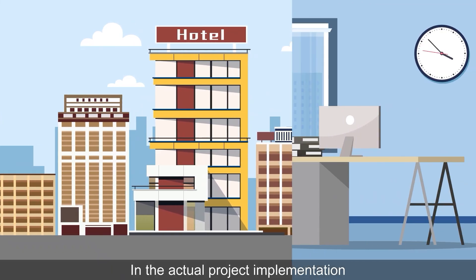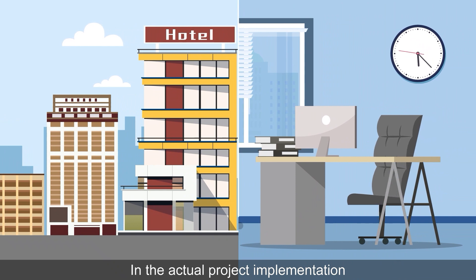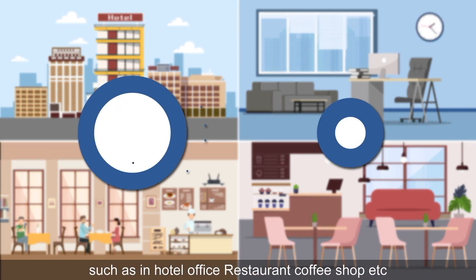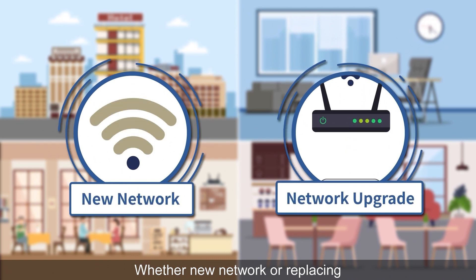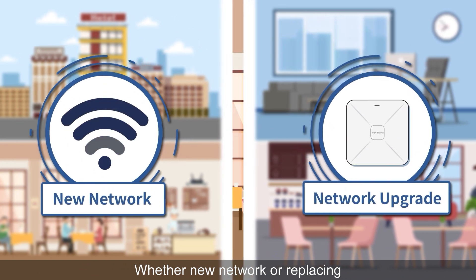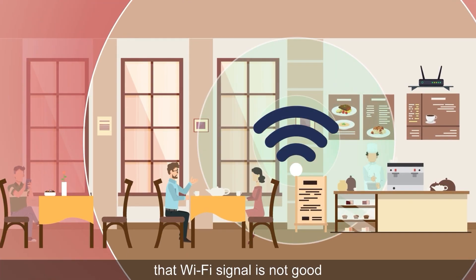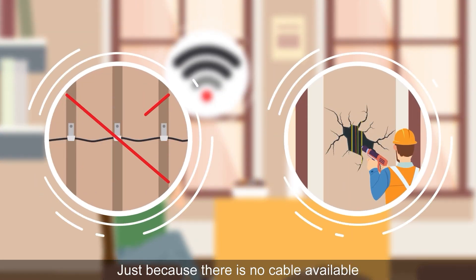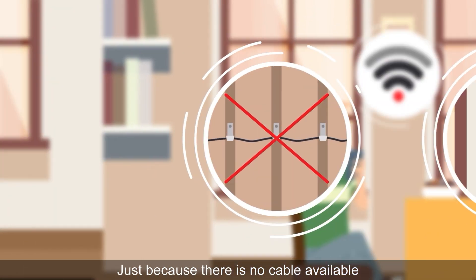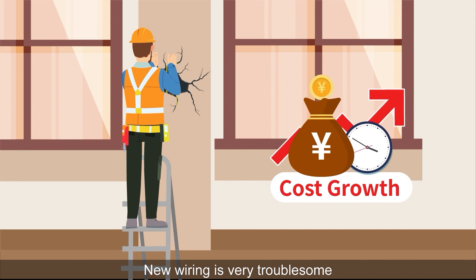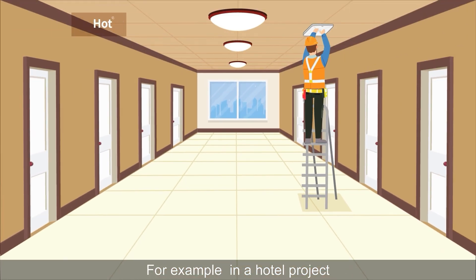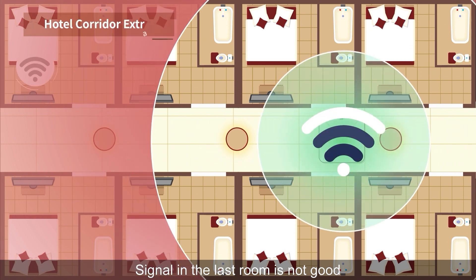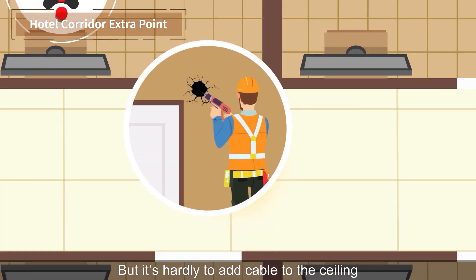In actual project implementations such as in hotels, offices, restaurants, and coffee shops — whether new networks or replacements — there are areas where Wi-Fi signal is not good, just because there is no cable available. New wiring is very troublesome. For example, in a hotel project, the signal in the last room is not good, but it is difficult to add cable to the ceiling.